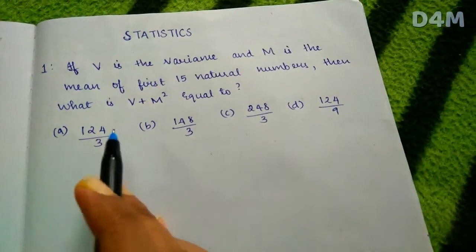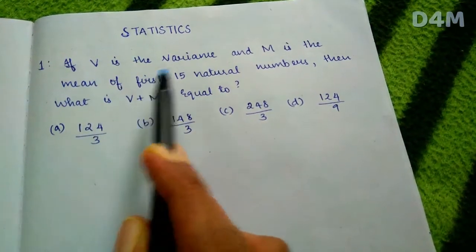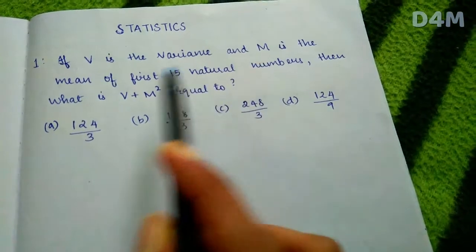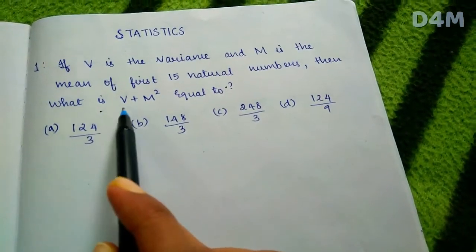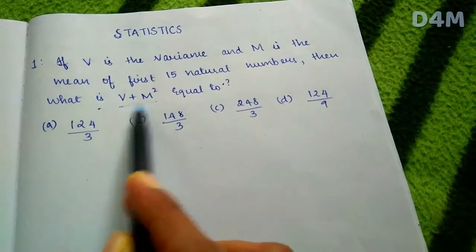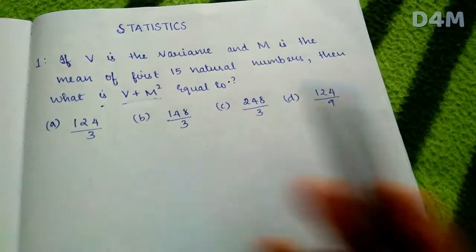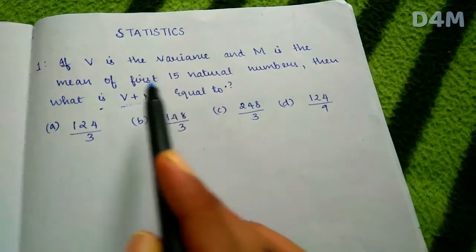The first question: If V is the variance and M is the mean of the first 15 natural numbers, then what is V plus M squared? We will calculate this.